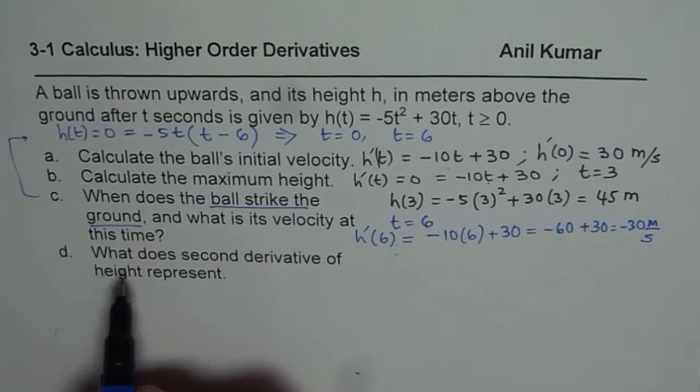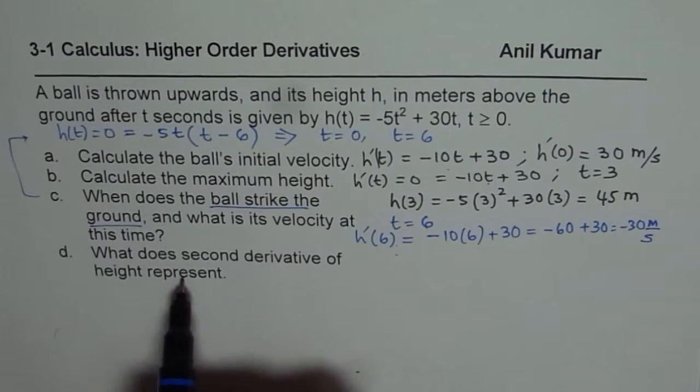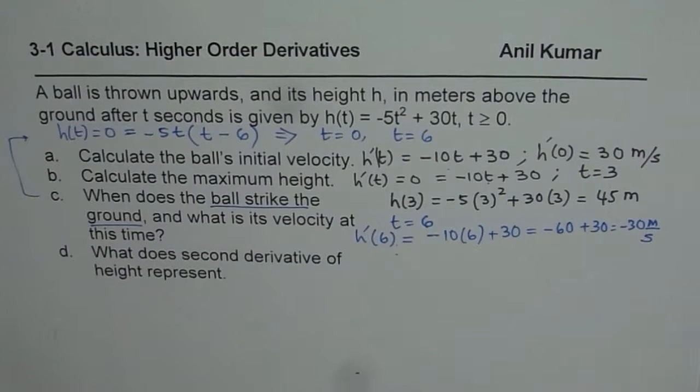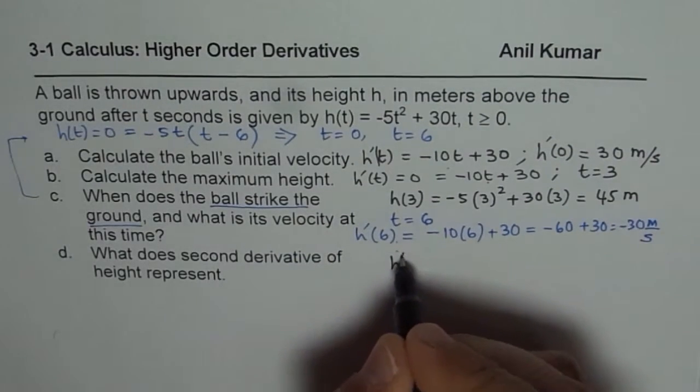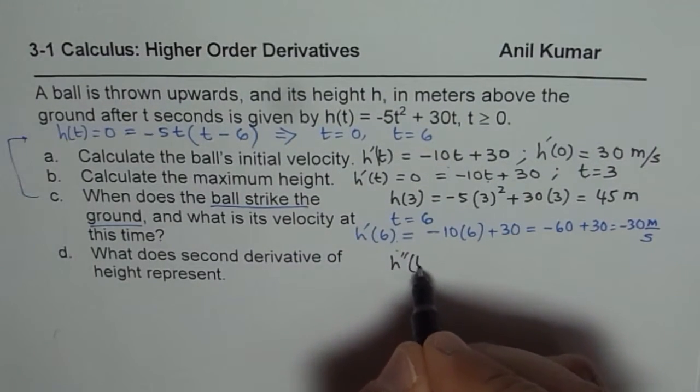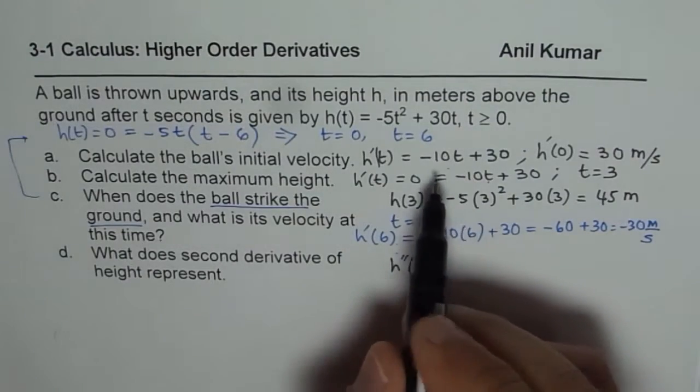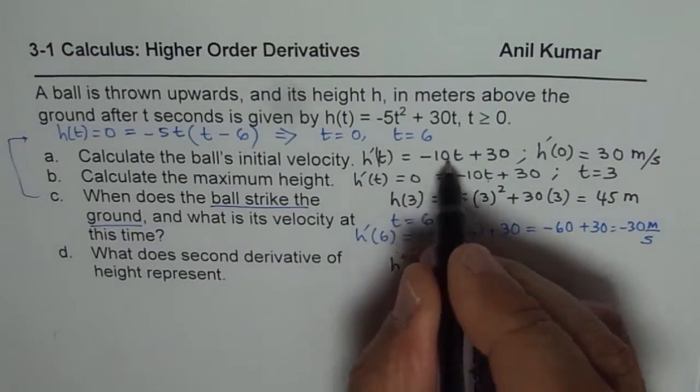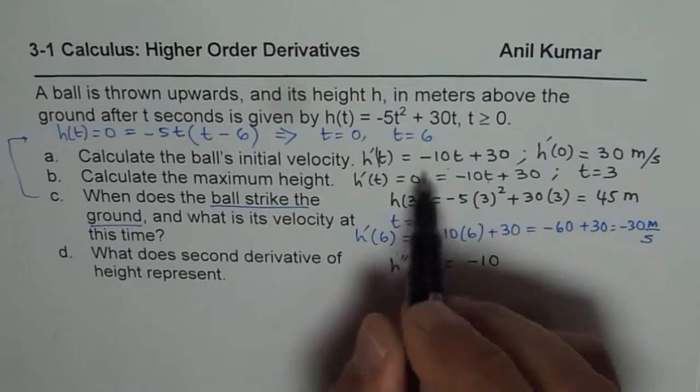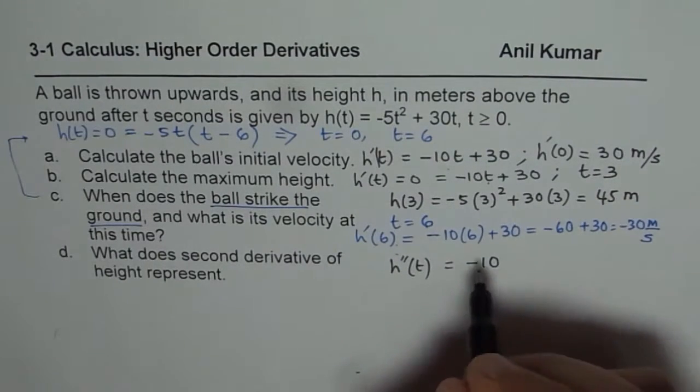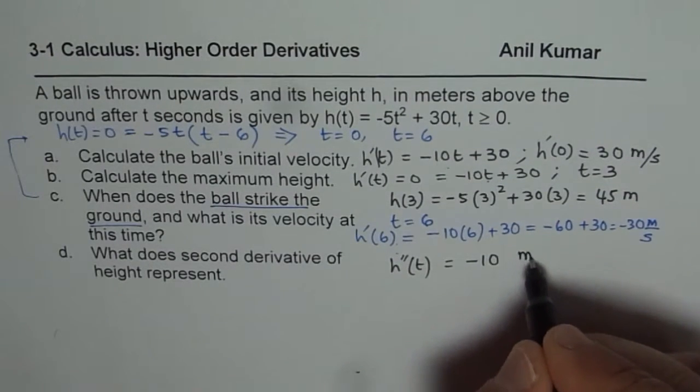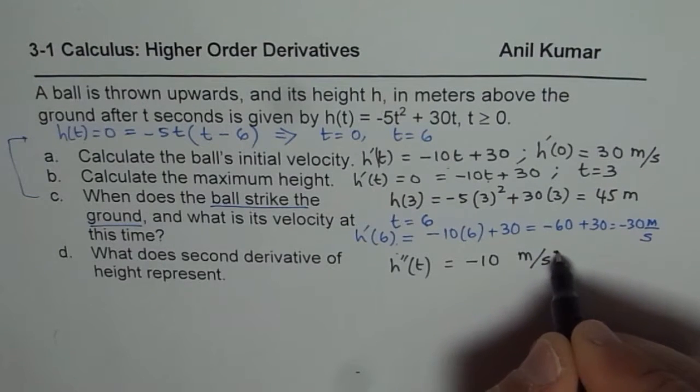Part d is what the second derivative of the height represents. That is to say what is the meaning of h''(t). So if you find that, so that will be equals to -10. So second derivative is -10. What does that indicate? Units will be meters per second square.